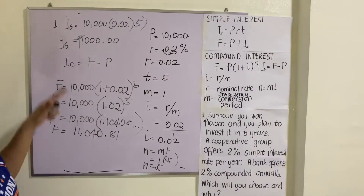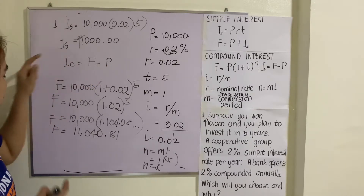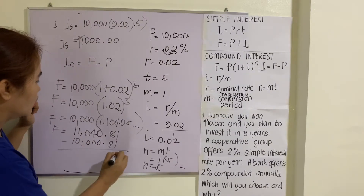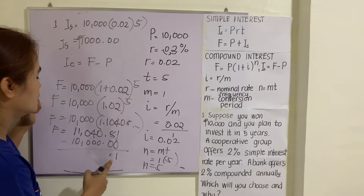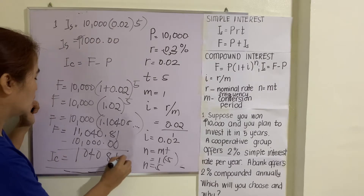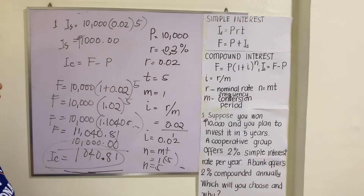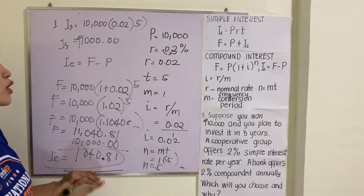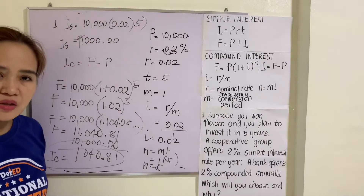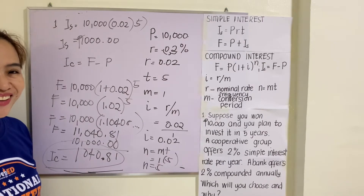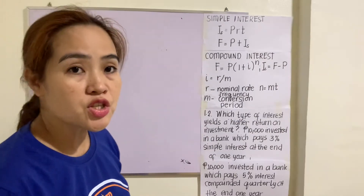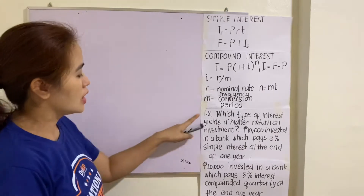To get I sub C, we subtract P from F: eleven thousand forty point eighty one minus ten thousand equals one thousand forty point eighty one. So the compound interest from the bank is one thousand forty point eighty one, while the cooperative gives only one thousand. If I were you, I'd invest in the bank — it's higher by forty pesos and eighty-one cents.